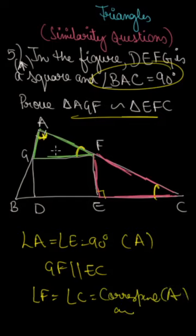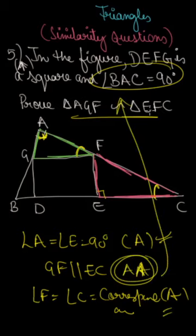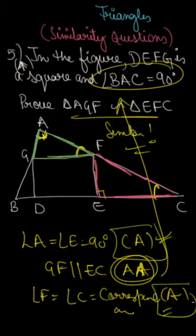We got two angles equal. By the AA criterion, we can see that these two triangles are completely similar. We have proved two angles are equal using the AA criterion.